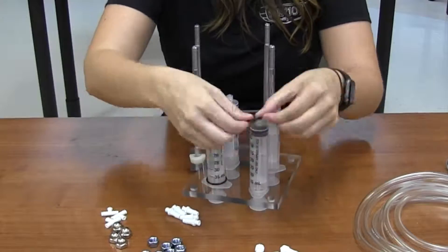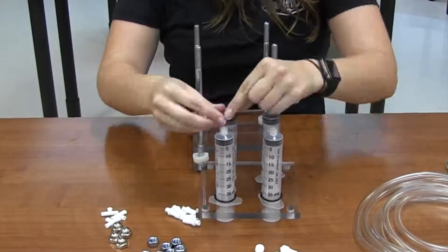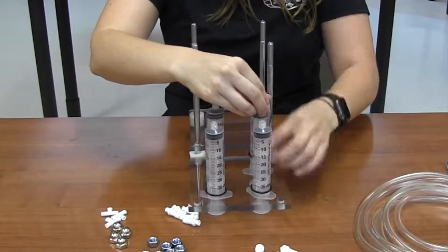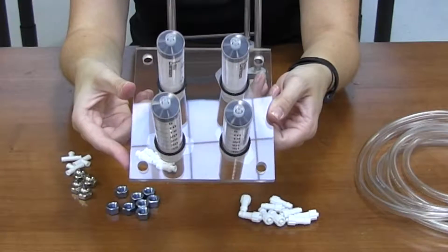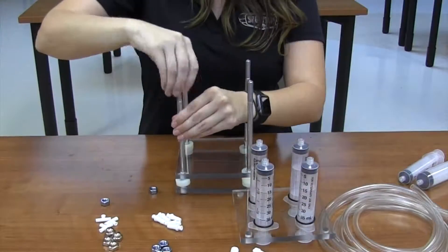The o-rings keep the syringes in place, but you will need to adjust them throughout the process. Since we want to be able to reuse the materials, we don't want to use something permanent like glue.